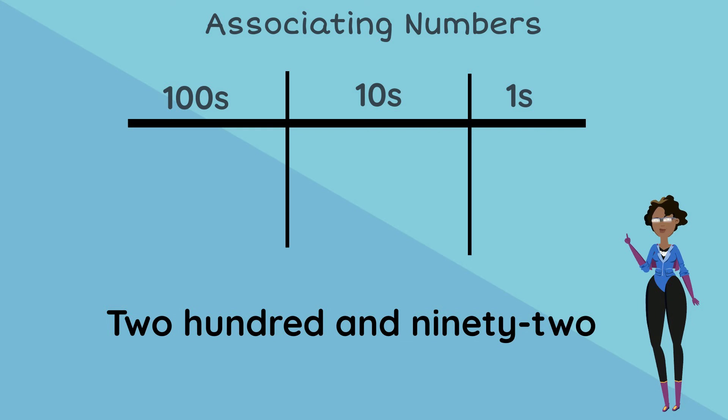let's insert them into our place values. 2 goes into the 100s place, 90 goes in the 10s place and 2 goes in the 1s place. Wow, good job! So the number for 292 is 2, then 9 and then 2.